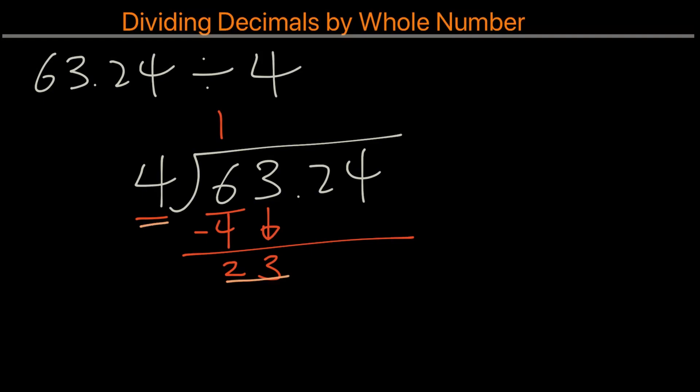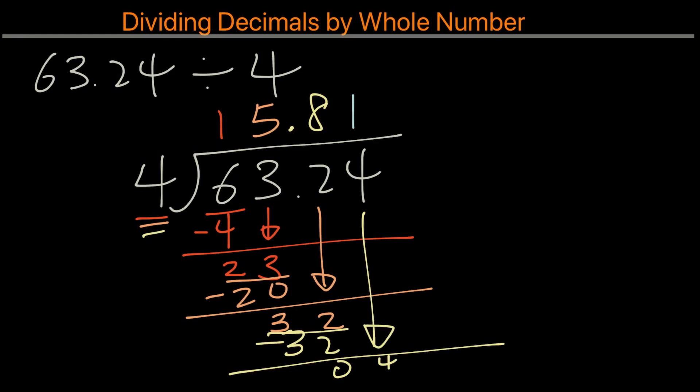23 divided by 4. 5 goes into it. 3. And we bring down the 2. 32 divided by 4. We get 8. We bring down the 4. And 4 times 1 is 4. And that gives us remainder 0. And our answer is 15.81.